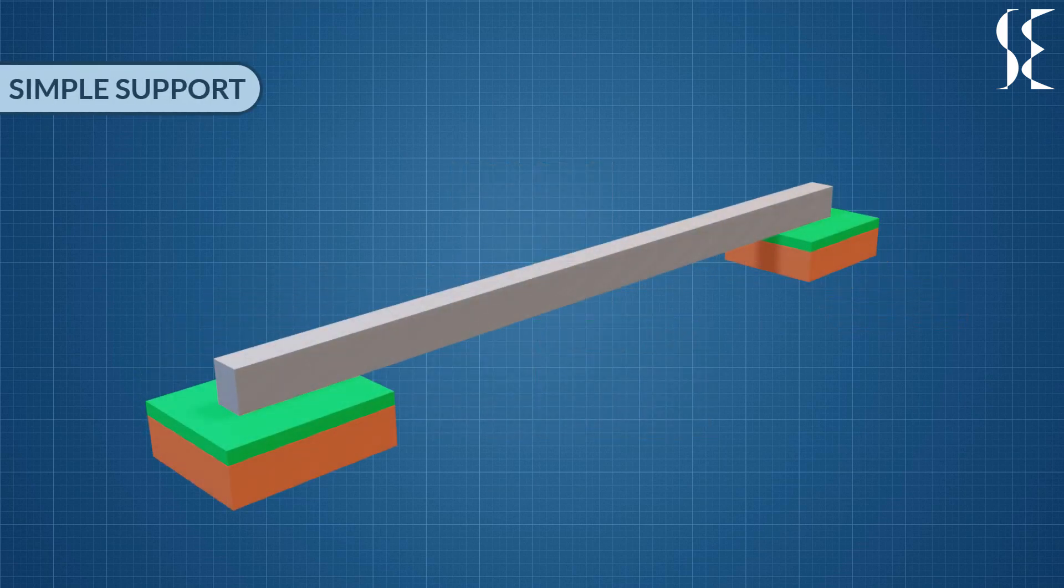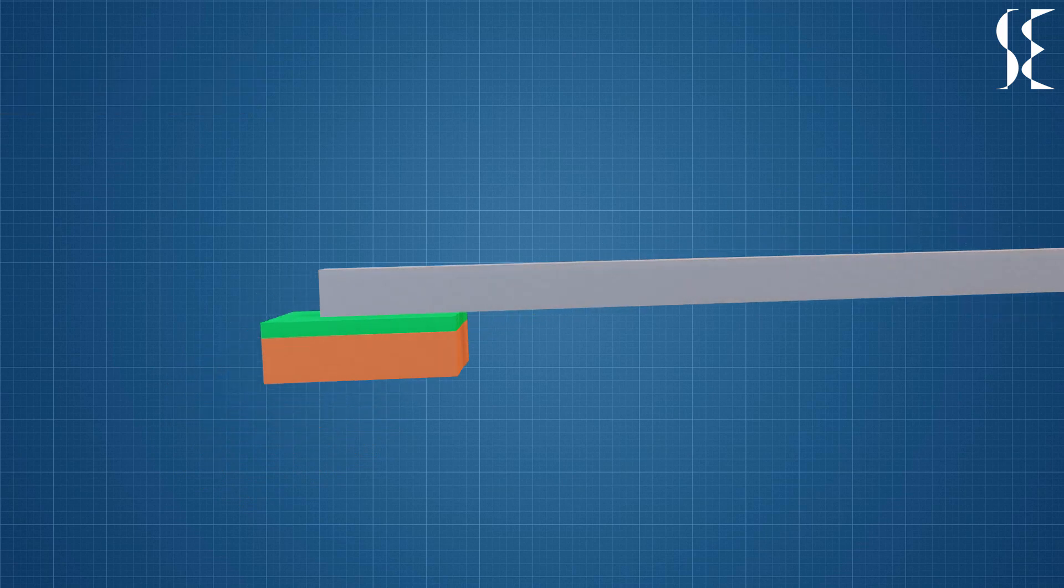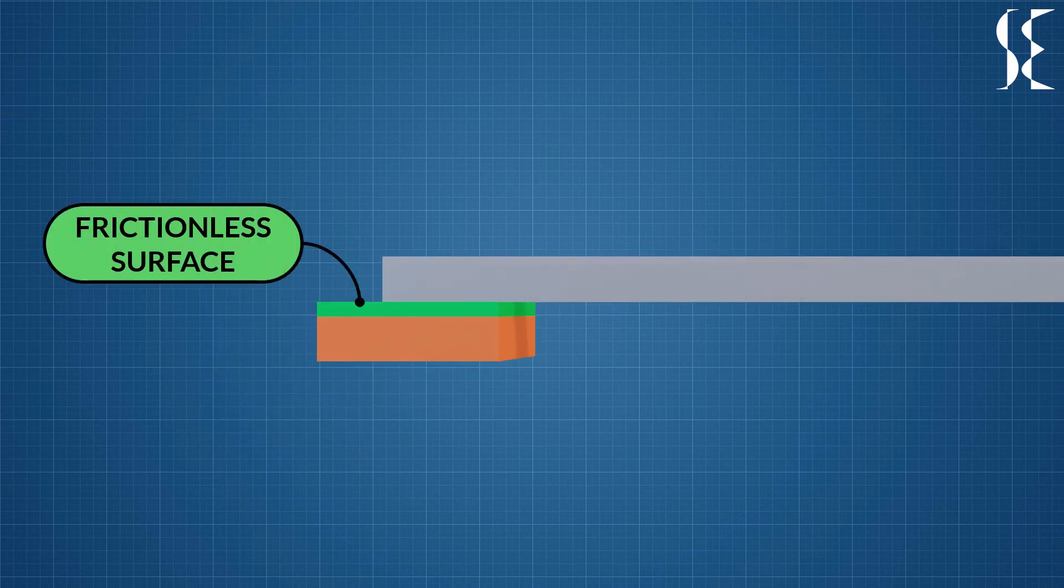In this support, the structural member simply rests on an external frictionless surface. This kind of support allows rotation and horizontal movements but not vertical motion. Hence, it produces only one reaction to the applied force which is perpendicular and away from the surface.